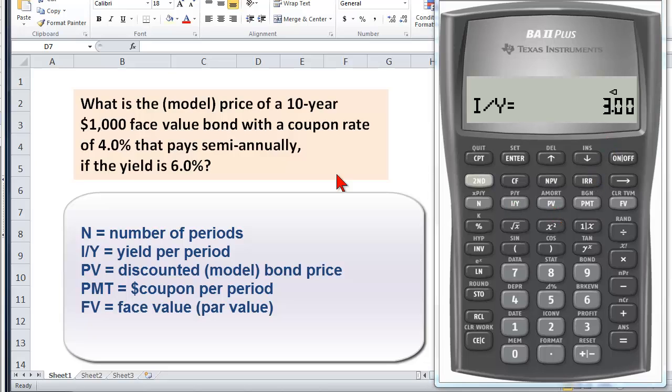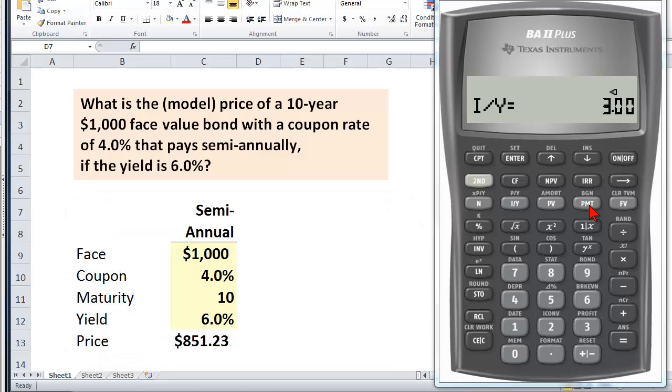What's next? The present value price of the bond. Well, I'm not giving that information. That's the one I'm solving for, so I skip it. Payment is the generic term for the cash coupon that's received each period. We have a $1,000 face value bond. It has a coupon rate of four percent, but we need to divide that by two. That gets us $20 every six months. Again, that four percent coupon rate is $40 annually, but $20 paid every six months. That's the payment.